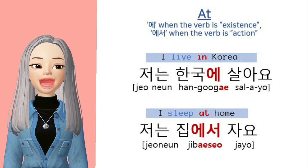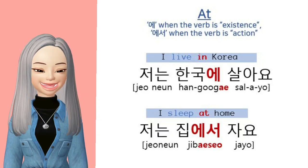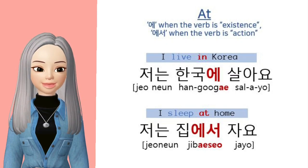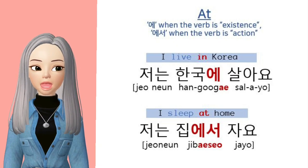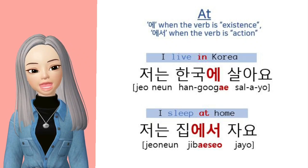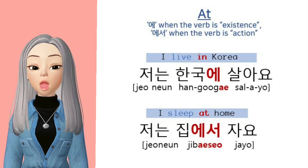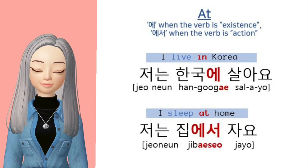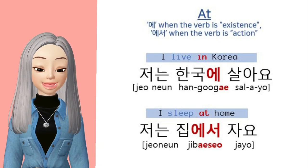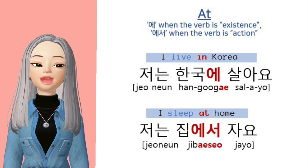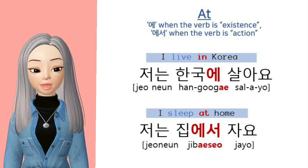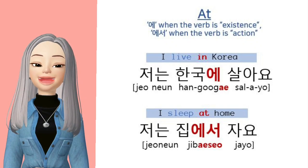So again, 에 and 에서 are both used for 'at'. But 에 is when the verb is about existence, not about moving — whereas 에서 is when the verb is an action. For example, 'I live in Korea' was 저는 한국에 살아요 because living just refers to existence rather than a specific movement. However, 'I sleep at home' uses 에서 because sleep is an action verb: 저는 집에서 자요.